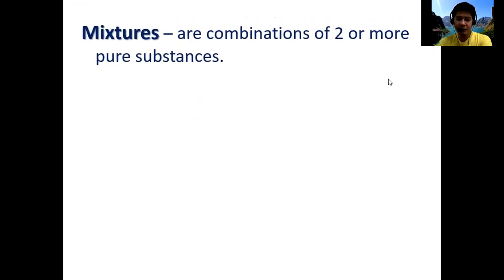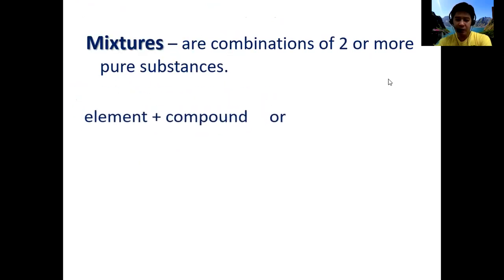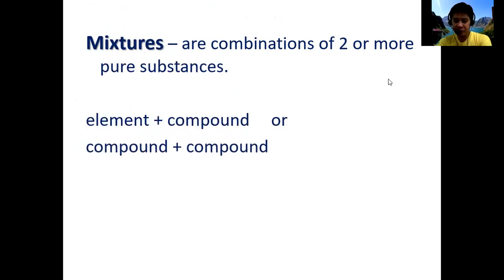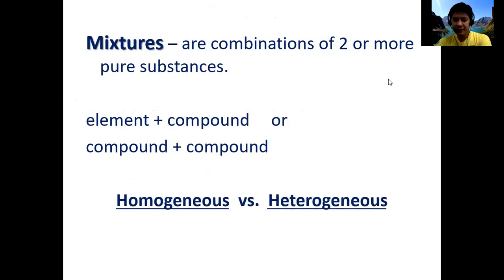Let us now proceed with mixtures. Mixtures are combinations of two or more pure substances — either a combination of elements and compounds, or compound plus another compound. We have two major subclassifications of mixtures: homogeneous mixtures and heterogeneous mixtures.